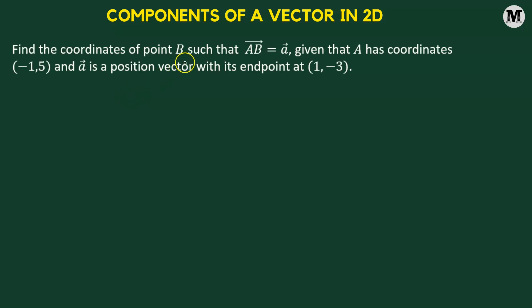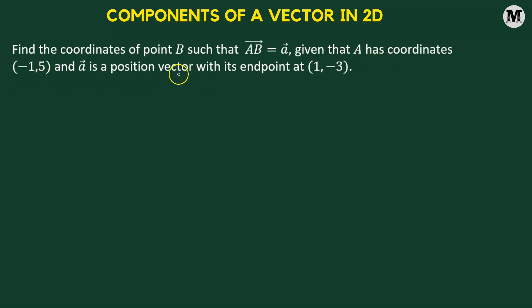Find the coordinates of point B such that AB vector equals vector A, given that A has coordinates negative 1 comma 5, and vector A is a position vector with its endpoint at 1 comma negative 3.